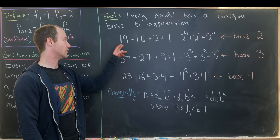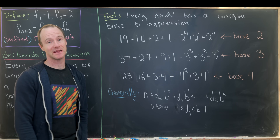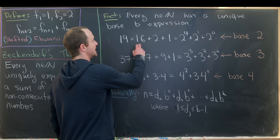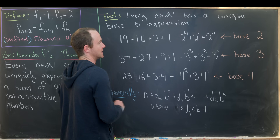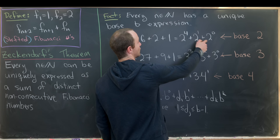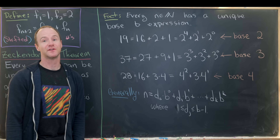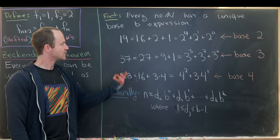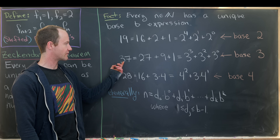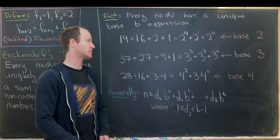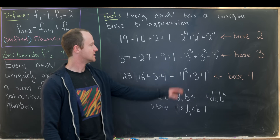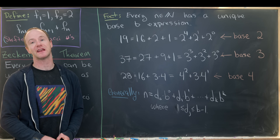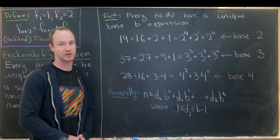For example, we can express 19 as a sum of powers of 2: it's 16 plus 2 plus 1, which is 2 to the 4th plus 2 to the 1st plus 2 to the 0th. That's a base-2 expansion of 19. Furthermore, we can write 37 as 27 plus 9 plus 1, which is 3 cubed plus 3 squared plus 3 to the 0th — a base-3 expression.